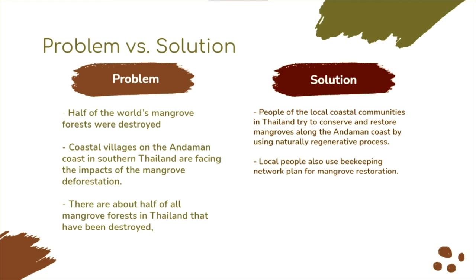Local people are using a beekeeping network to support mangrove forest restoration. They build bee boxes and place them close to mangrove forests, which helps improve restoration efforts and honey production, providing suitable alternative livelihoods for Thai coastal communities.